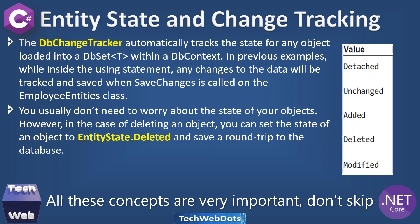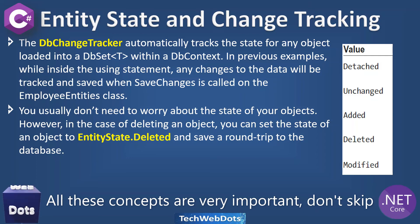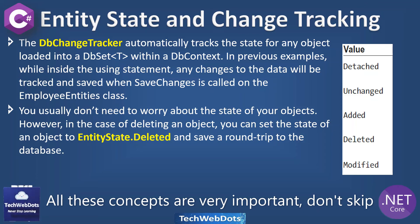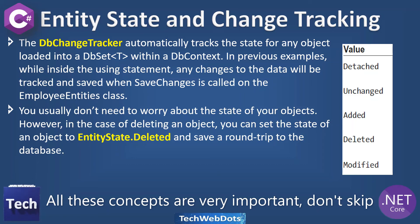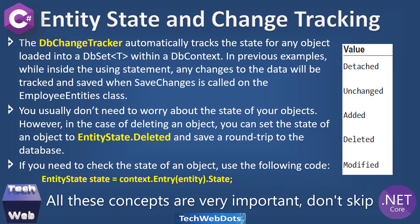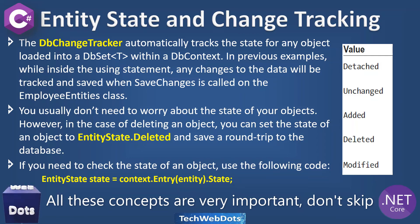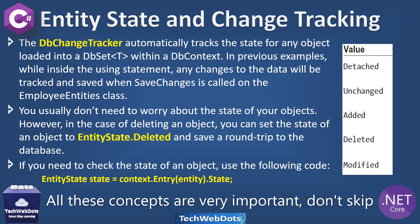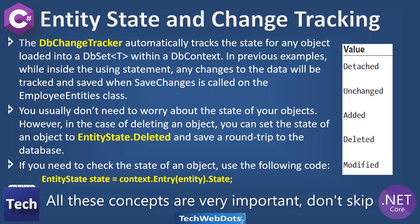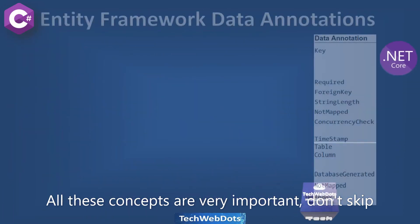You usually don't need to worry about the state of your objects. However, when deleting an object, you can set the state to EntityState.Deleted and save a round trip to the database. The different values of EntityState are: Detached, Unchanged, Added, Deleted, and Modified. If you need to check the state of an object, you can write: context.Entry(entity).State to get the current state of that entity.